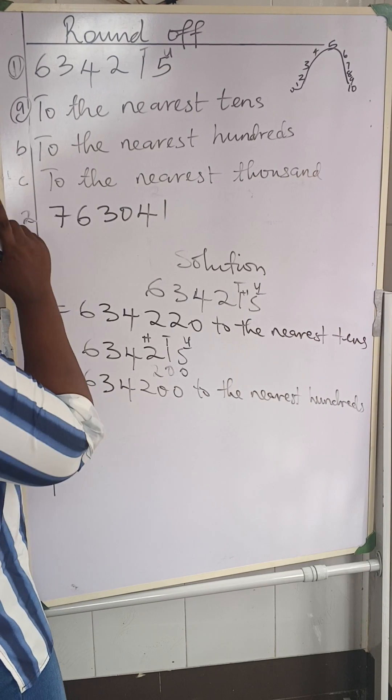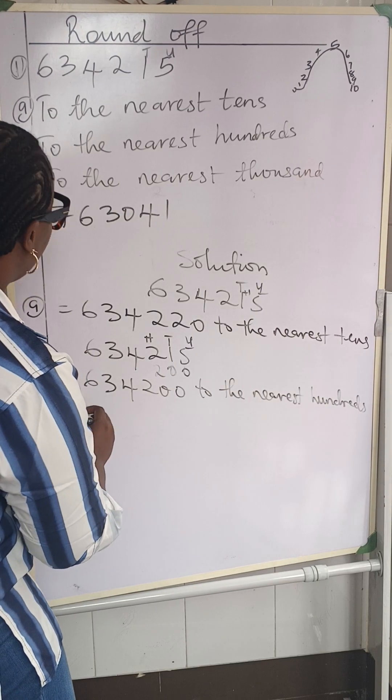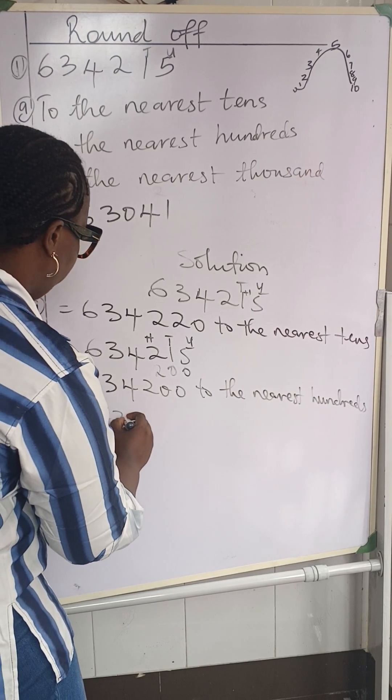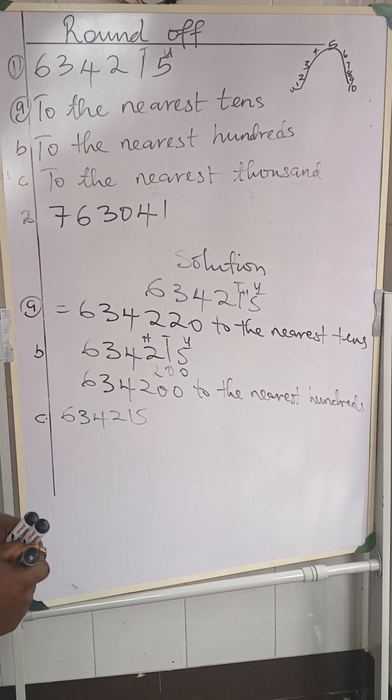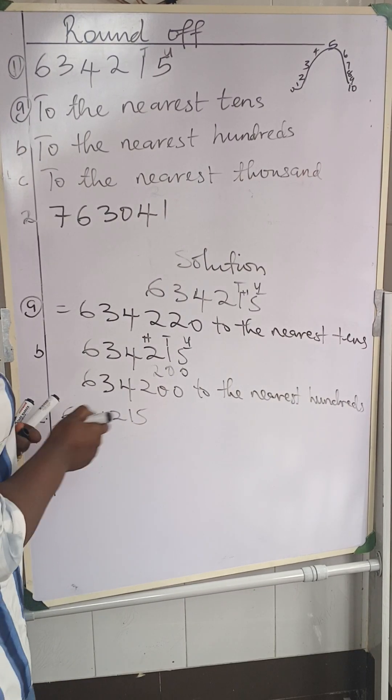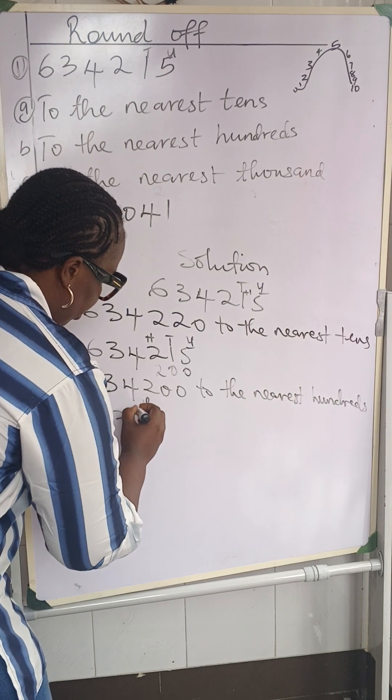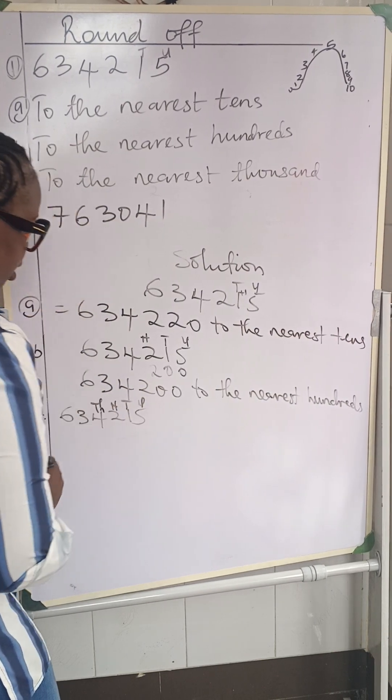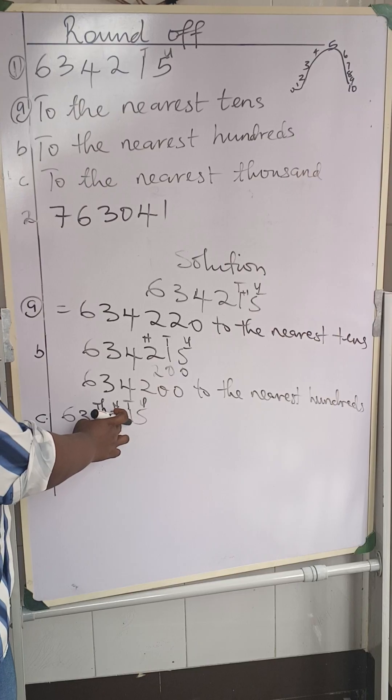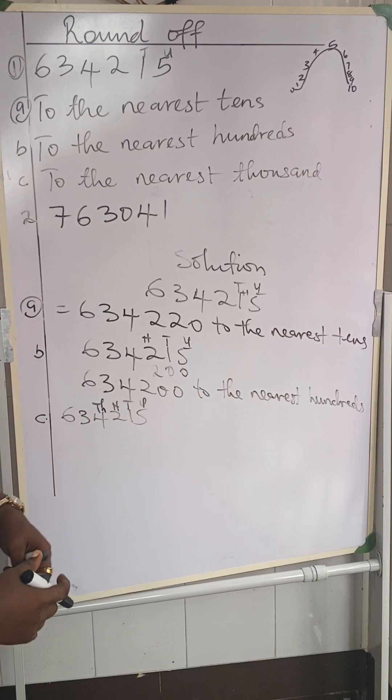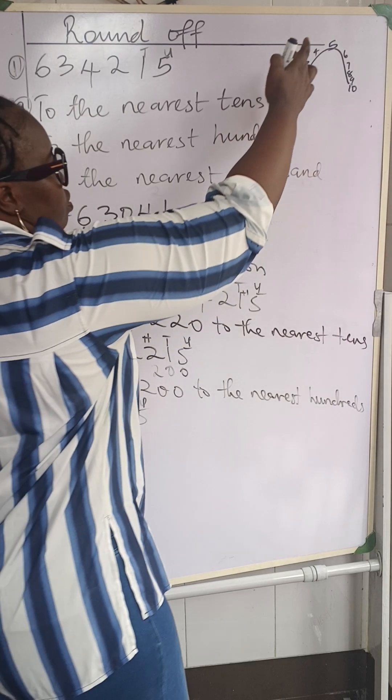And lastly, the C, we'll have the same number, 634,215 to the nearest thousand. And we have to label it first. We'll have units, tens, hundreds, and our thousand here, right? And what's the closest neighbor as usual? Hundreds, which is represented by 2. This 2, is it up to 5? It's not up to 5, so it's going down to 0.